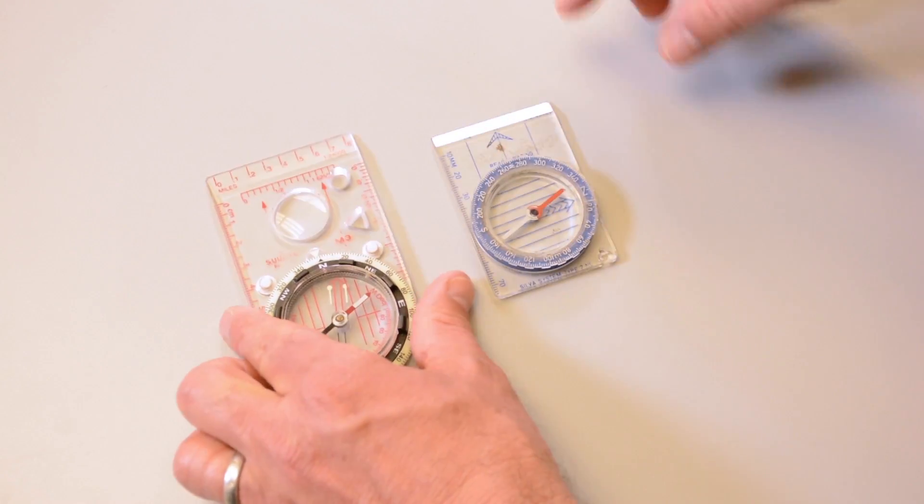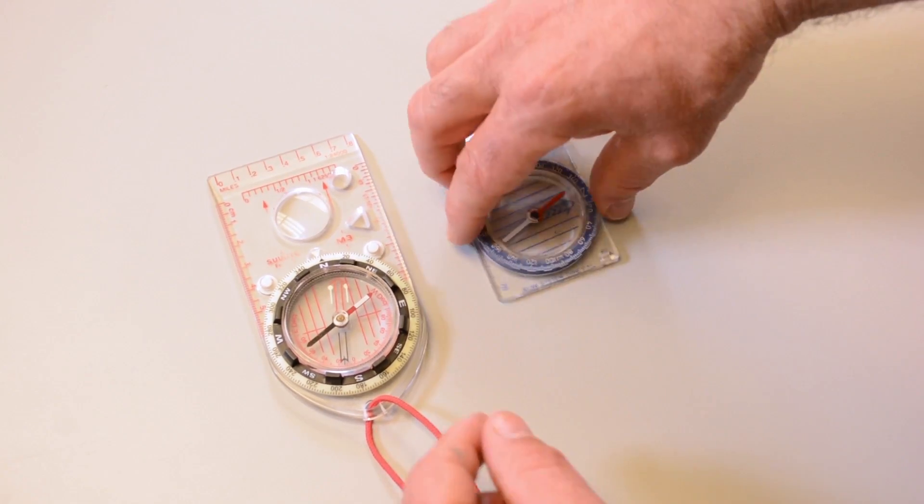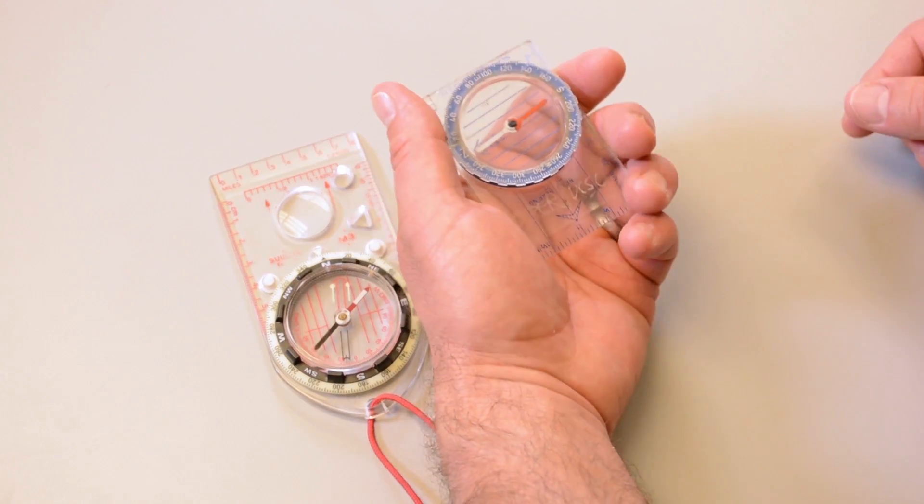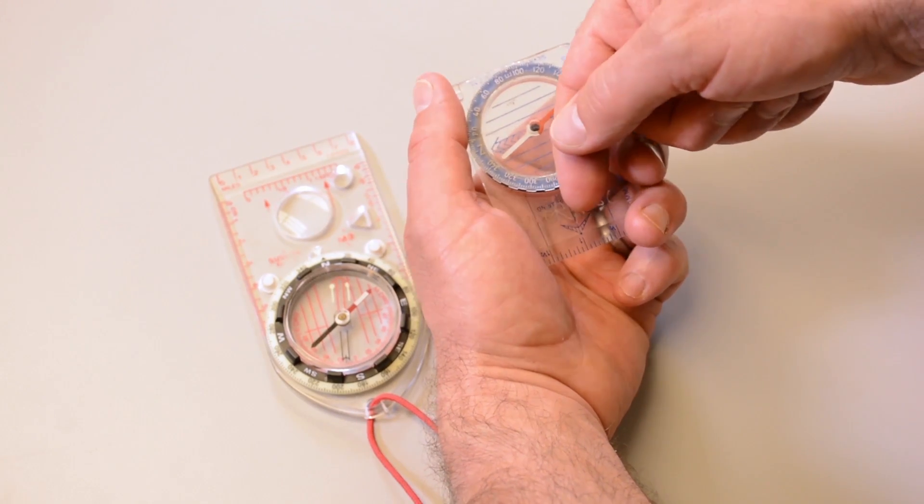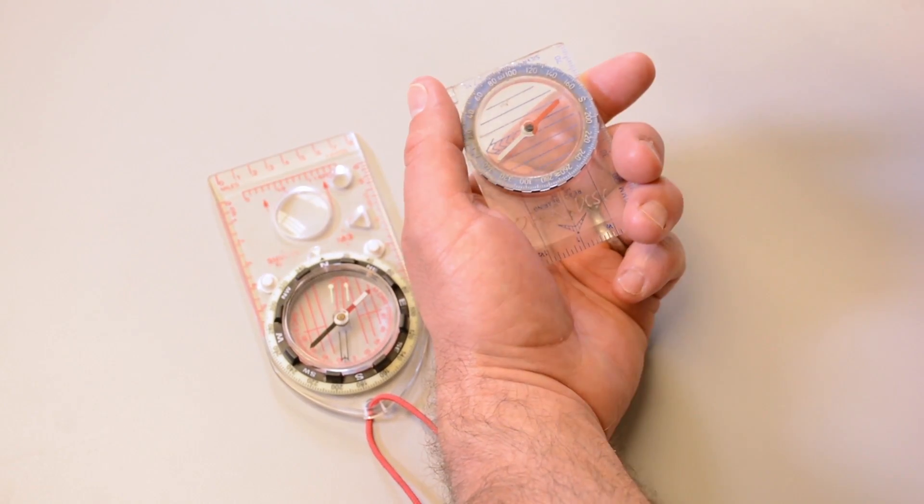With a compass like this, that's rectangular all the way around, it's easy to make the mistake of holding the compass backwards with the direction of travel arrow pointing toward you rather than away from you.